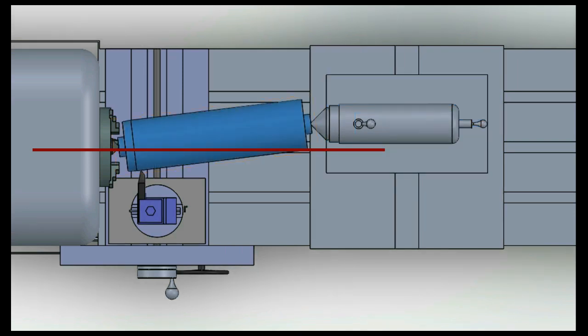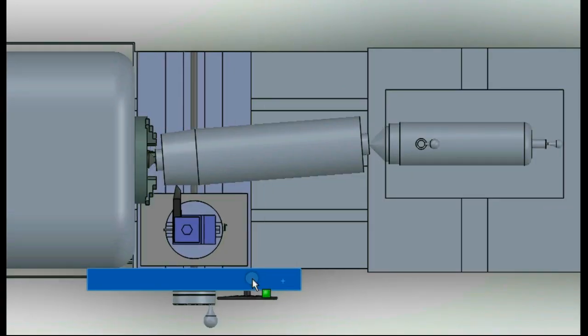Thus when the workpiece is fixed using the live center and the dead center, its axis of rotation changes to this line which is at an angle with the feed. So when the feed is given to the tool, it cuts at an angle to the axis of the workpiece producing a taper.